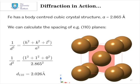Let's take a look at this in action. So, here we have iron, which has a body centered cubic crystal structure, with a lattice parameter of about 2.865 angstroms.